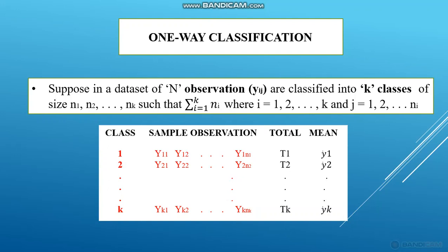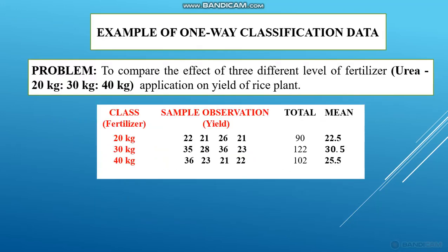In one-way classification, we classify data based on only a single factor, into classes 1, 2, 3, up to K classes. For example, suppose I want to compare the effect of three different levels of fertilizer — Urea at 20 kg, 30 kg, and 40 kg — on the yield of rice plants. Here, I am classifying the sample observations, where the yield of the plant is my sample observation.